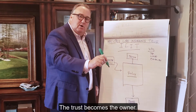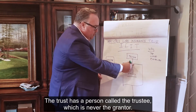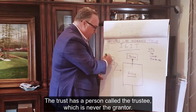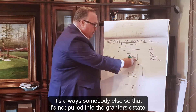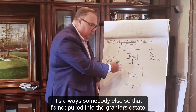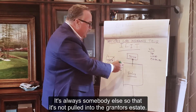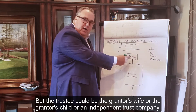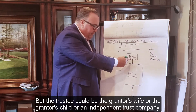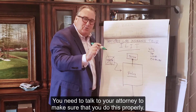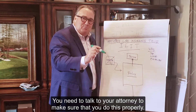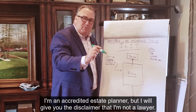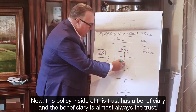The trust becomes the owner. The trust has a person called the trustee, which is never the grantor — it's always somebody else so that it's not pulled into the grantor's estate. The trustee could be the grantor's wife, the grantor's child, or an independent trust company. You need to talk to your attorney to make sure that you do this properly. I'm an accredited estate planner, but I will give you the disclaimer that I'm not a lawyer.